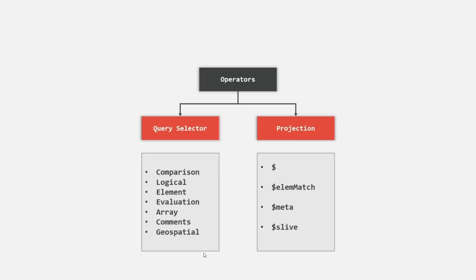We can classify the query selector operators into different categories: comparison operators, logical operators, element operators, evaluation operators, array operators, comments, and geospatial operators. Geospatial operators are used to work with geolocation-related data and will be covered in a future section. In this section, apart from geospatial operators, we will cover all other query selector operators. We also have projection operators such as $, $elemMatch, $meta, and $slice. In the next lecture, let's talk about the comparison operators and how we can use them to filter the result set.